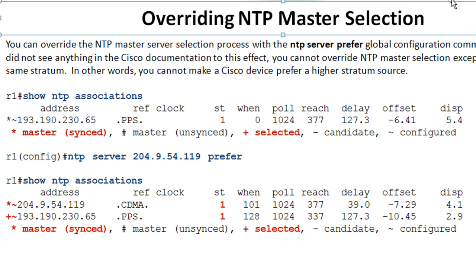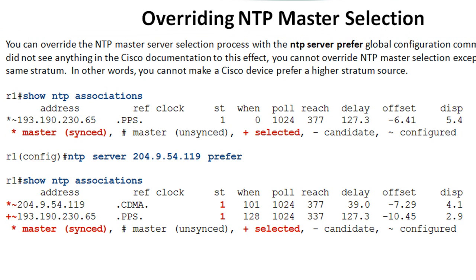You might think you can use prefer to make a stratum 14 override a stratum one — I tested this and you can only use prefer within the same stratum. If you have three servers at stratum one, two, and three and you say prefer the stratum three, it will not prefer it — it will still prefer the stratum one. It only prefers one server over another within a stratum.